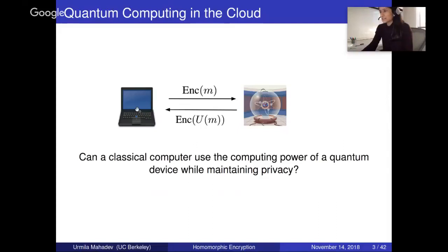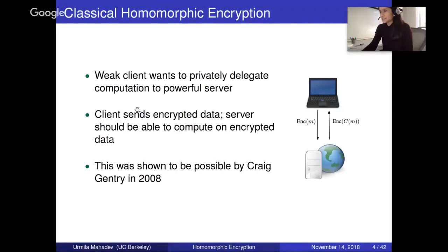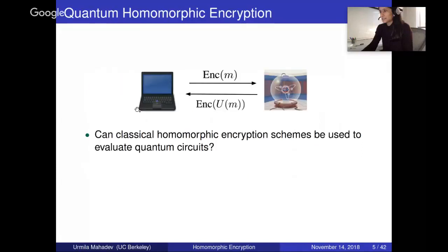This question has been really well studied in classical cryptography, and it's called classical homomorphic encryption. Here the setting is a weak classical client and a more powerful classical server. The client sends over encrypted data and the server should be able to compute an arbitrary classical circuit on the encrypted data. This was studied for a while and was first shown to be possible by Craig Gentry in 2008. Once we look at these classical homomorphic encryption schemes, the first question to ask is whether we can directly take these schemes and use them to apply quantum operations.